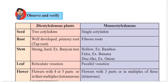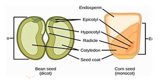Let's learn about dicotyledonous and monocotyledonous plants. First, looking at the seed: in dicotyledonous plants, the seeds have two cotyledons — the seeds can be divided into two parts. In monocotyledonous plants, the seeds have a single cotyledon — just one part. The bean seed is a dicotyledonous seed with two parts, whereas a corn seed is a monocotyledonous seed with just one single part.